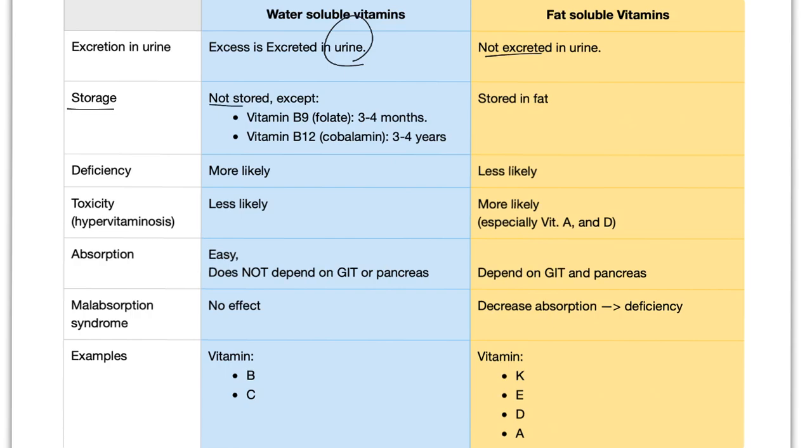Storage. Not stored because they are lost in the urine all day. Except vitamin B9, which is folate, the liver can store it for three to four months. Or vitamin B12 or cobalamin, the liver can store it for three to four years, which is amazing. Fat-soluble vitamins, they're called fat-soluble vitamins. They are stored in the fat all day long.